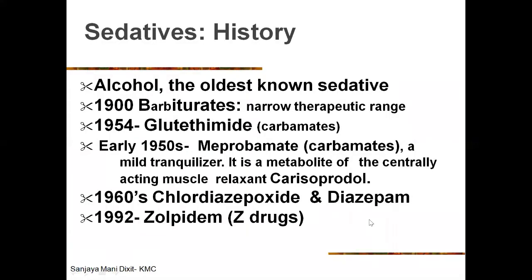In the history of sedatives, alcohol was the oldest known sedative. Before the 1920s prohibition act in America, even pediatricians prescribed alcohol to help small babies fall asleep. After prohibition (1920), alcohol was made illegal for medical prescription. Then came barbiturates, introduced in 1900. Because they have a very narrow therapeutic range and can cause toxicity, anesthesia, and coma, barbiturates are not used much as sedatives and hypnotics today.